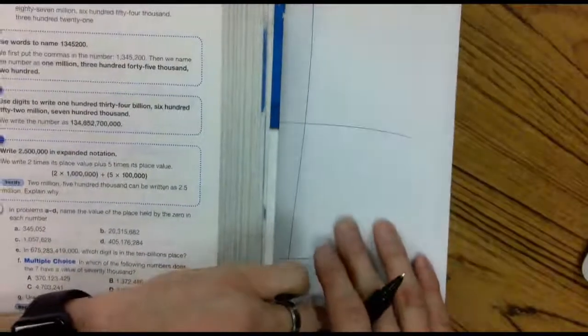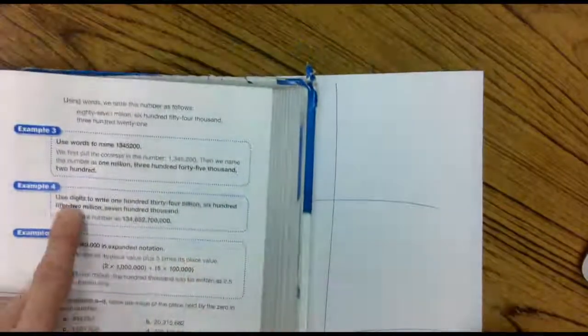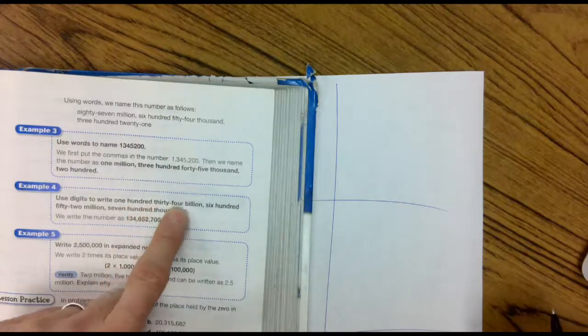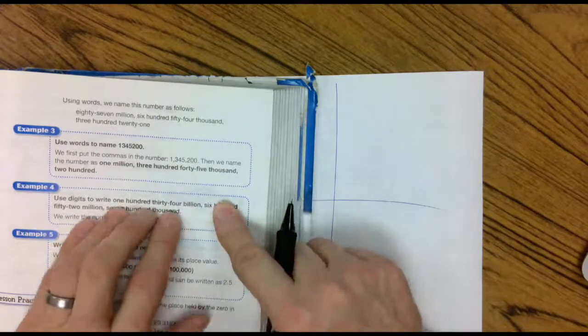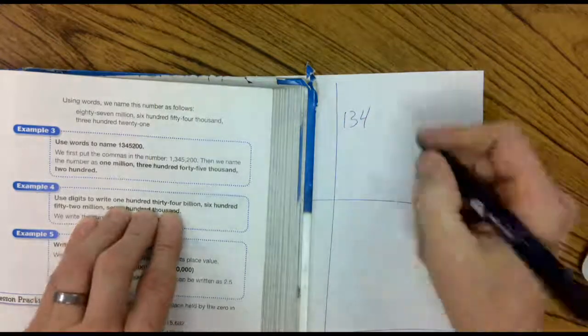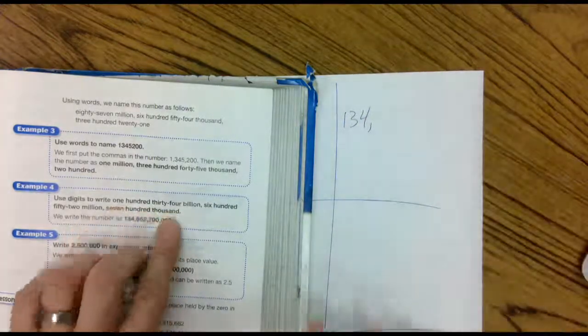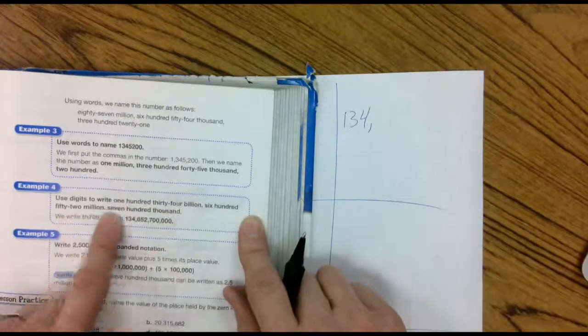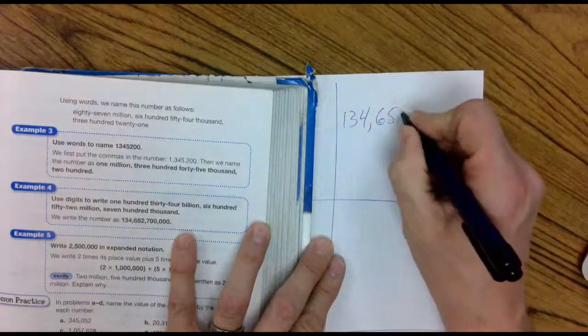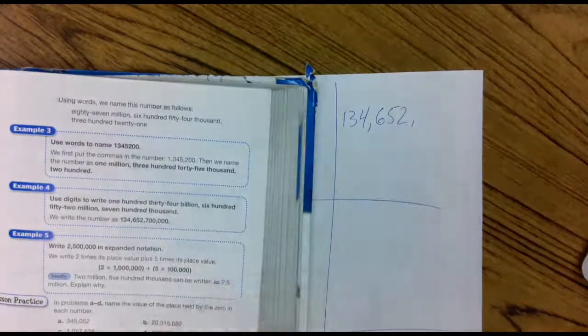Example number four, it says use digits to write one hundred thirty-four billion. One hundred thirty-four. That's easy. Comma says billion. Six hundred fifty-two million. Six hundred fifty-two. Comma says million.